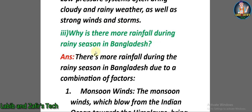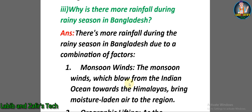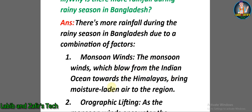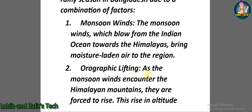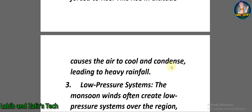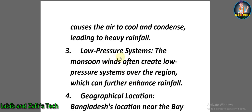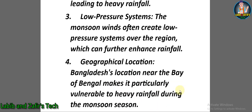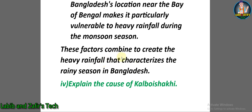Descriptive question number three: Why is there more rainfall during the rainy season in Bangladesh? Answer: There is more rainfall due to a combination of factors. Number one — monsoon winds: the monsoon winds blow from the Indian Ocean towards the Himalayas, bringing moisture-laden air. Number two — orographic lifting: as monsoon winds encounter the Himalayan mountains, they rise, cool, and condense, leading to heavy rainfall. Number three — low pressure systems enhance rainfall further. Number four — geographical location: Bangladesh's position near the Bay of Bengal makes it particularly vulnerable to heavy monsoon rainfall.